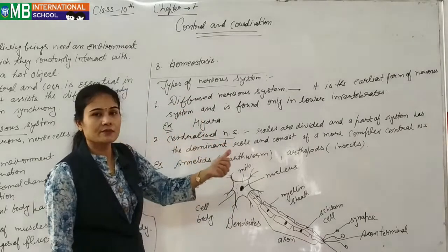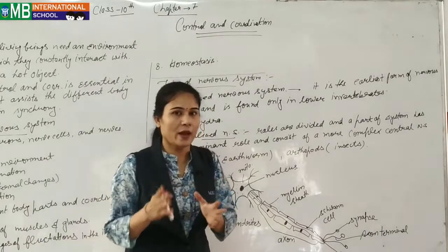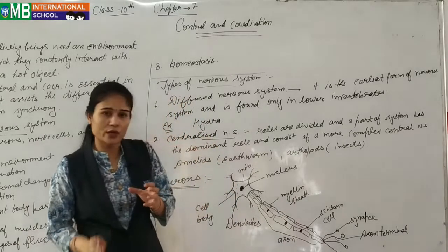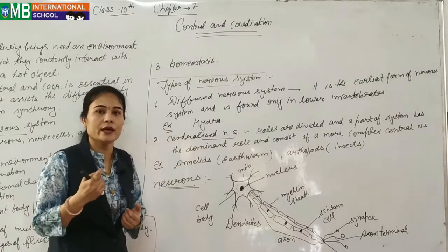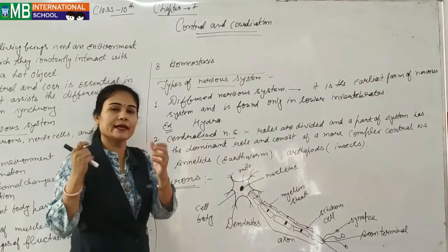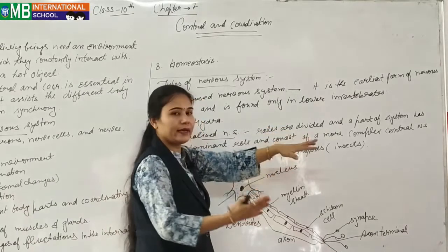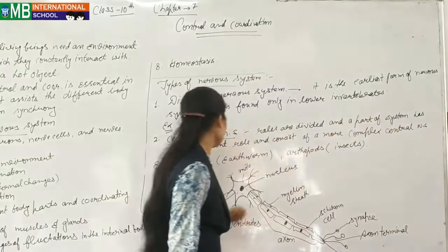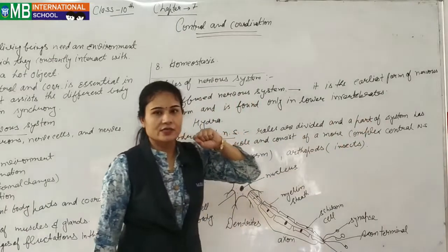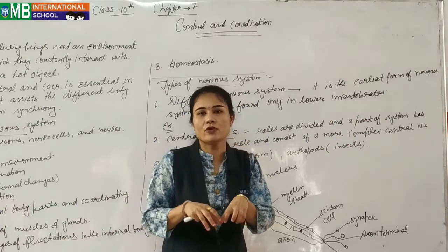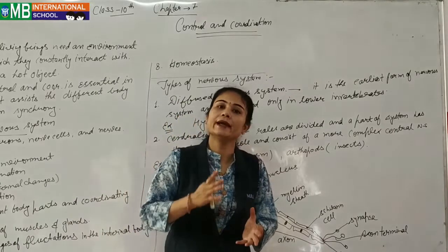In the centralized nervous system, different parts of the body are correlated with different functions, whereas in the diffuse nervous system only one organ system correlates with all functions. We humans have a centralized nervous system — the main responsible parts are the spinal cord and our brain, which control our senses and body posture. Later we will discuss the exact functions of the spinal cord. The central part is responsible for all types of senses, neurons, nerve cells, and other parts of our body.